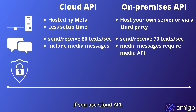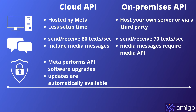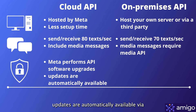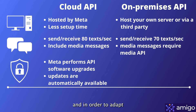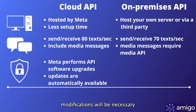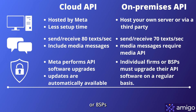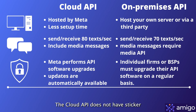The third comparison is upgrades and security features. With Cloud API, Meta performs API software upgrades, and features and security updates are automatically available. Only minor code modifications will be necessary to adapt to long-term API changes. In contrast, with On-Premises API, individual firms or BSPs must upgrade their API software on a regular basis.